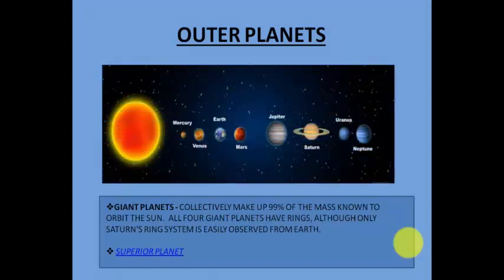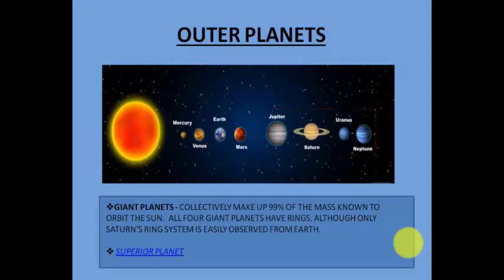The outer planets are Jupiter, Saturn, Uranus, and Neptune — also called the giant planets. Giant planets collectively make up 99% of the mass known to orbit the Sun. All four giant planets have rings, although only Saturn's rings are visible and can be observed from Earth.